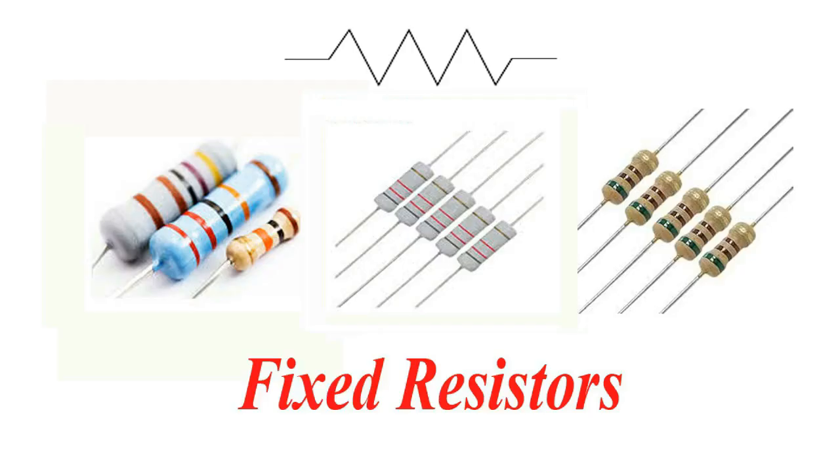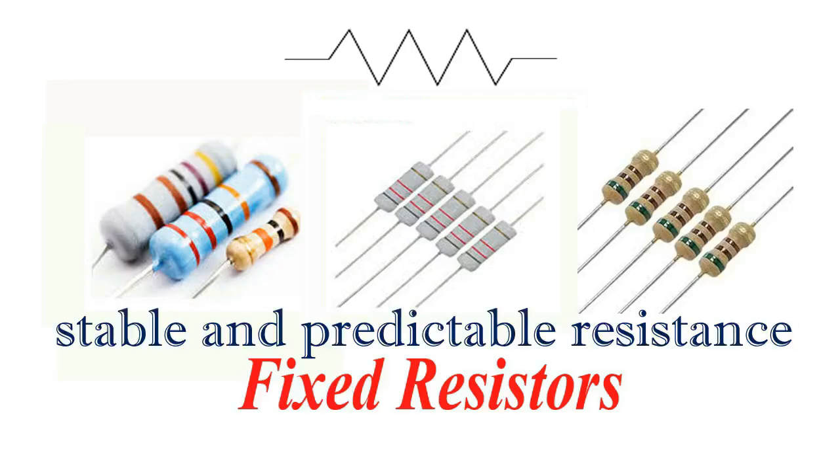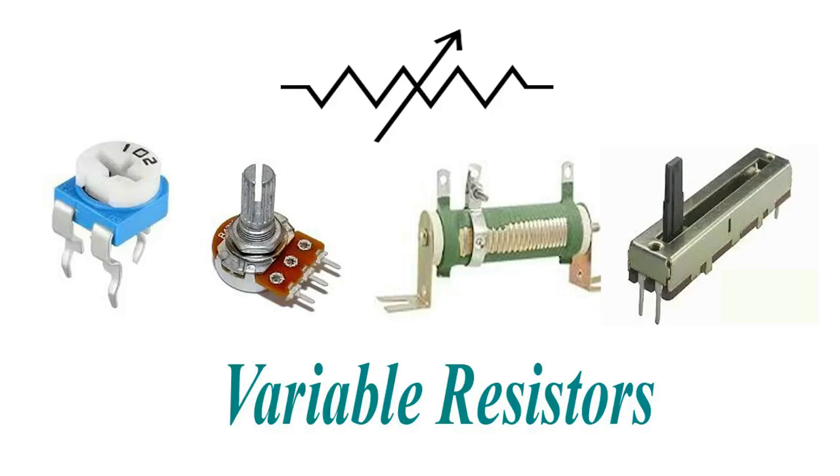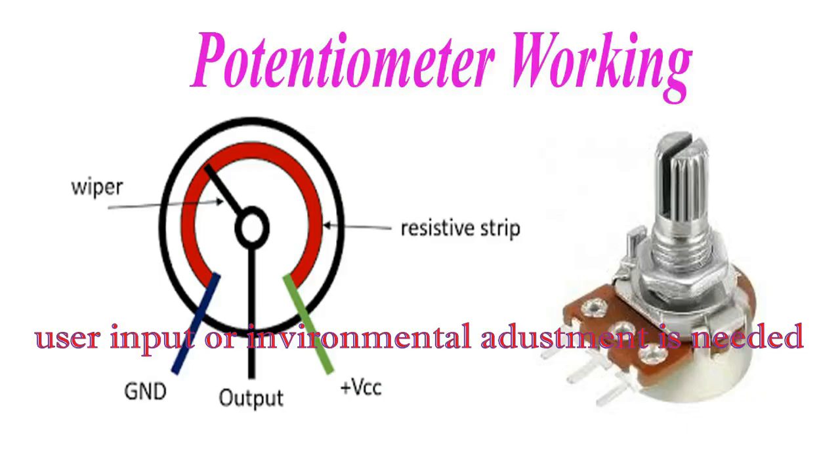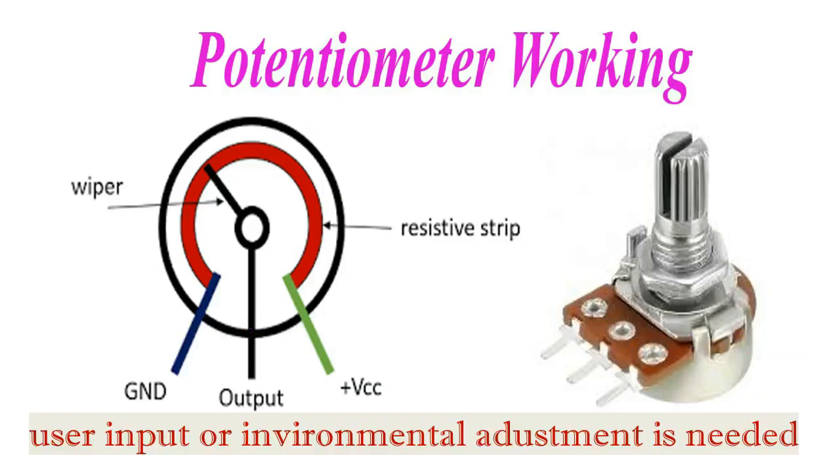Fixed resistors are used in circuits where stable and predictable resistance is needed, whereas variable resistors are used for applications that require user input or environmental adjustment, like volume control knobs.